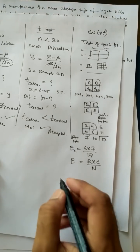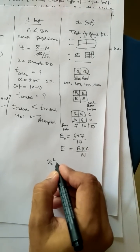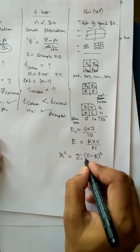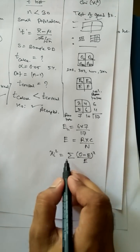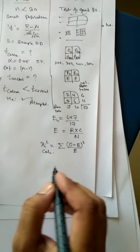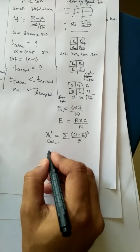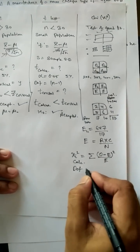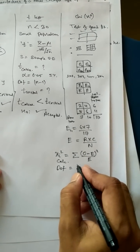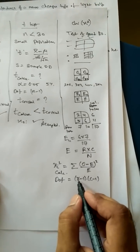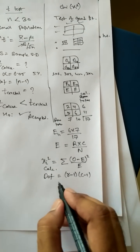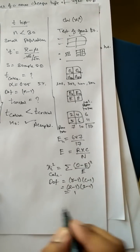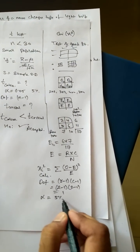After calculating all expected frequencies, you apply the chi-square formula: chi-square equals the summation of (observed frequency minus expected frequency) squared, divided by expected frequency. The sum of all these terms gives the chi-square calculated value. You then find the chi-square critical value from the table at the degree of freedom, calculated as (R-1)×(C-1), where R is the number of rows and C is the number of columns. For a 2×2 matrix, degree of freedom = (2-1)×(2-1) = 1, and at alpha = 0.05.